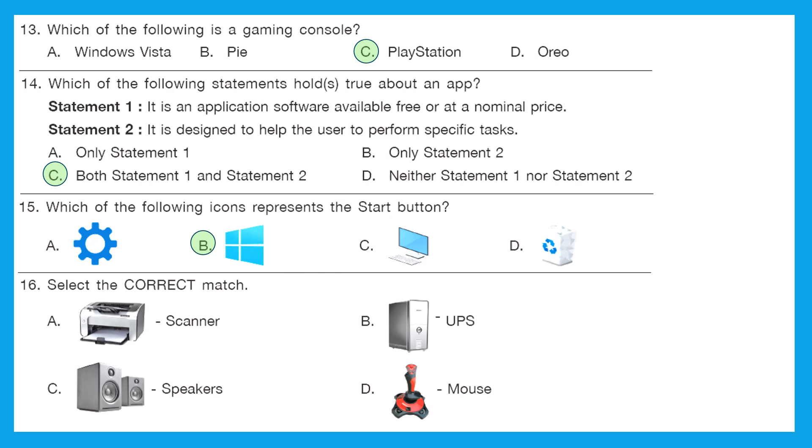Question 16: select the correct match. In A what is shown? It is a printer and here it is written scanner. So it is not correct. B is a case and it is written as UPS. This is also not correct. C is a speaker and it is written as speakers. So this is the correct match. The right answer is option C.